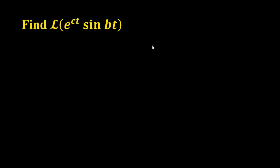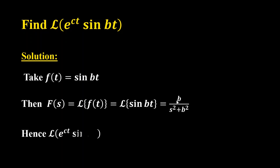Next problem: find L of e raised to ct into sin bt. For this we use the formula - sin bt has corresponding transformation b by s square plus b square.